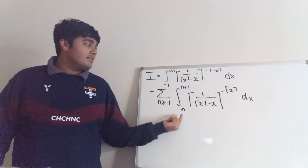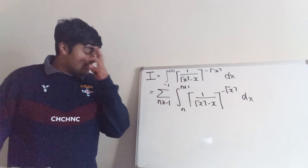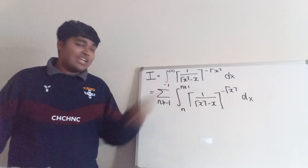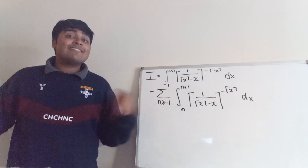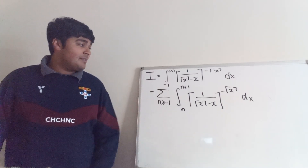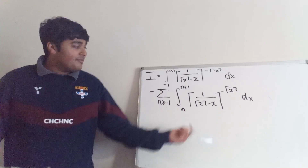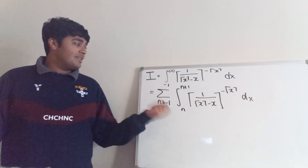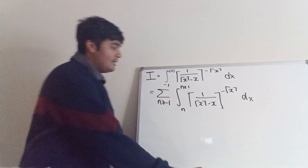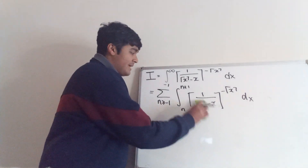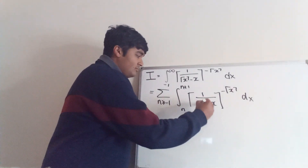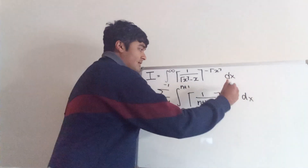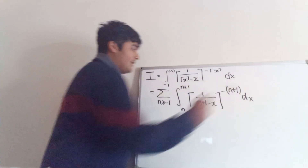The reason we want to do this is to eliminate some of the ceiling functions. If we notice, in the integral range between n and n plus 1, the ceiling of x is always going to be equal to n plus 1. So I can go ahead and replace any occurrence of the ceiling of x with just n plus 1. So ceiling of x in the first position becomes n plus 1, and ceiling of x in the exponent also becomes n plus 1.